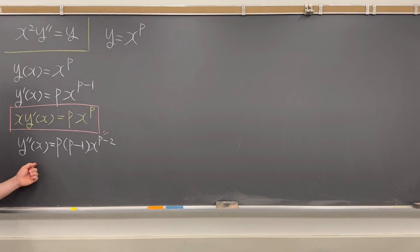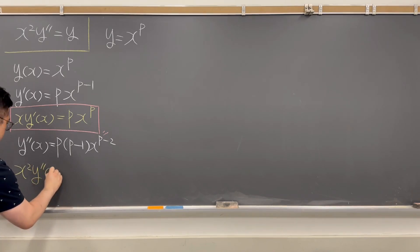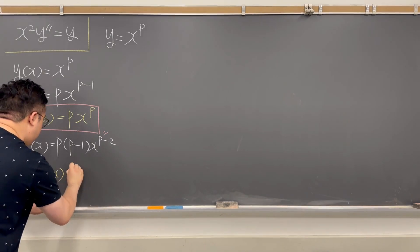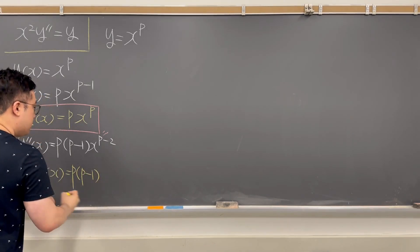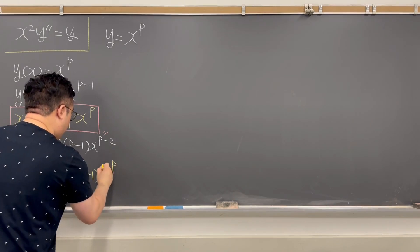If you multiply x squared on the left and right-hand side, then we will have x squared y double prime x is equal to p times p minus 1 times just x to the power of p.